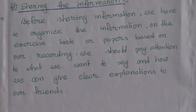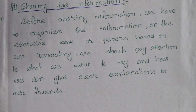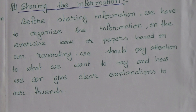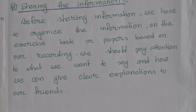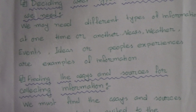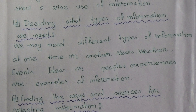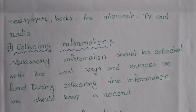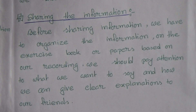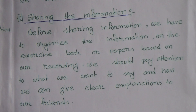Now broad question answer 2. In broad question answer 1, we discussed how we can use information wisely in our daily life. We have to follow 4 steps: deciding what types of information we need; finding the ways and sources for collecting information; collecting information; and then sharing the information with other people.